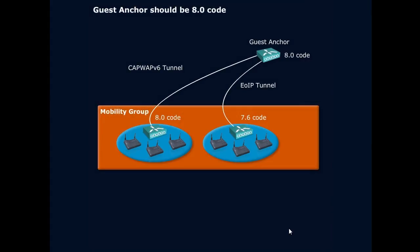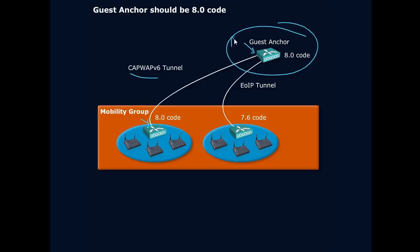Now we continue to talk about guest access for IPv6. What if we have a guest anchor that we use for our guest traffic? Well, in 8.0 code, that's fairly easy. We use the Capwap version 6 tunnel, and we're using IPv6 addresses here and here. Remember, 8.0 code is pretty much the full Monty when it comes to IPv6 — we get all the features.